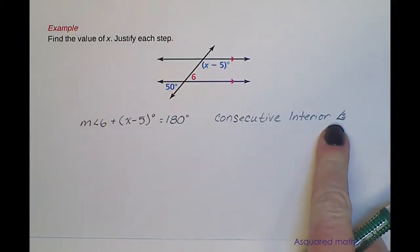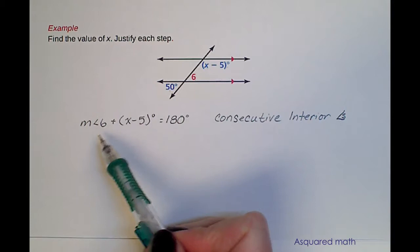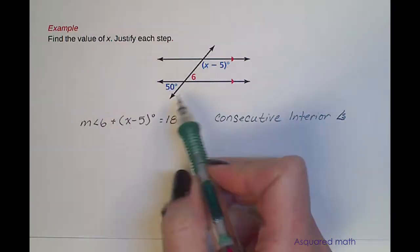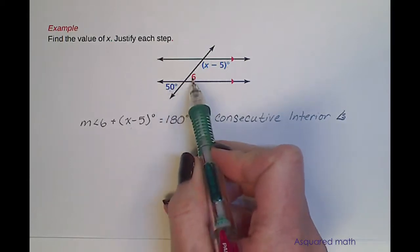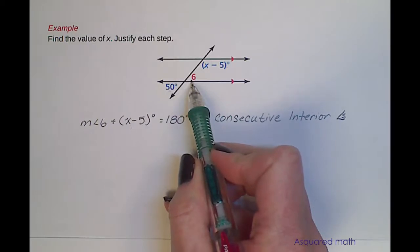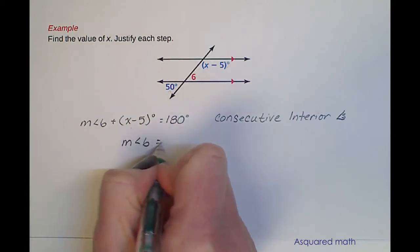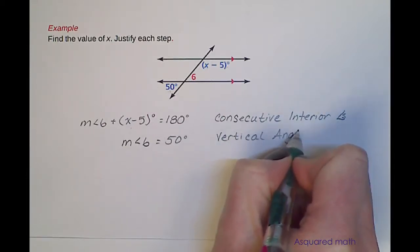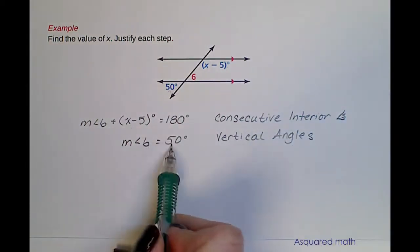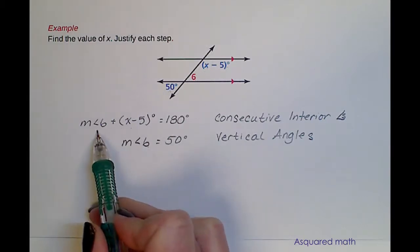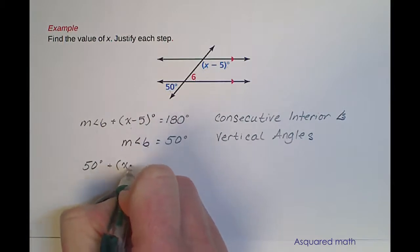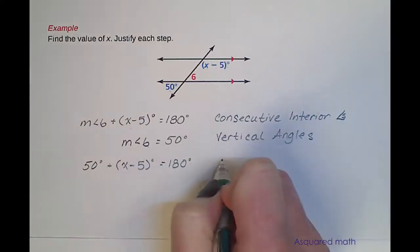The little angle symbol with an 's' inside of it is shorthand for angles. Right now we still have two bits of missing information, so we need to figure out the measure of angle 6 to solve for x. We can see that angle 6 and the 50-degree angle are vertical angles, so the measure of angle 6 equals 50 degrees — the justification being vertical angles. We can then substitute that in: 50 degrees plus x minus 5 equals 180 degrees, and that's just through substitution.